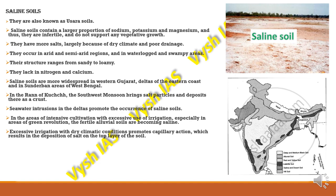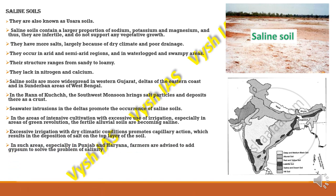Excessive irrigation under dry climatic conditions promotes capillary action, resulting in deposition of salts on the top layer of soil. In areas like Punjab and Haryana, farmers are advised to add gypsum to the soil to solve the problem of salinity.